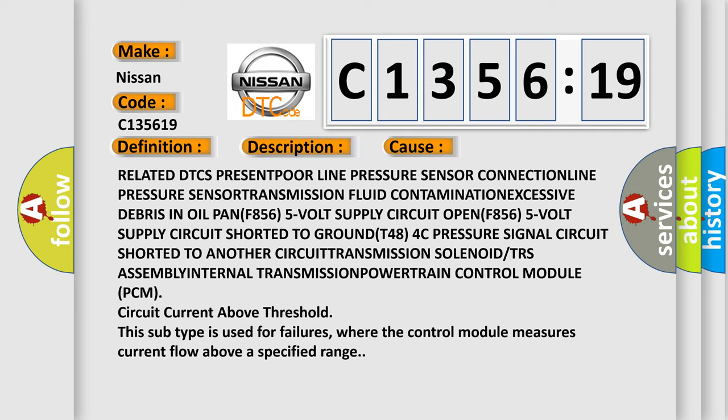This diagnostic error occurs most often in these cases: Related DTC's present, poor line pressure sensor connection, line pressure sensor, transmission fluid contamination, excessive debris in oil pan F856, 5-volt supply circuit open F856, 5-volt supply circuit shorted to ground, T484C pressure signal circuit, transmission solenoid, or TRS assembly internal transmission, powertrain control module PCM. Circuit current above threshold. This subtype is used for failures where the control module measures current flow above a specified range.